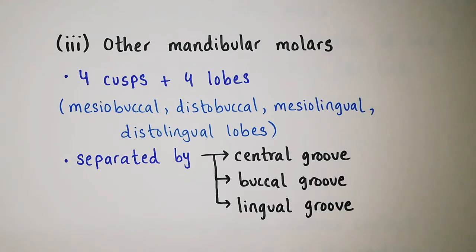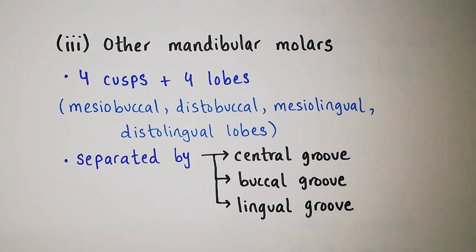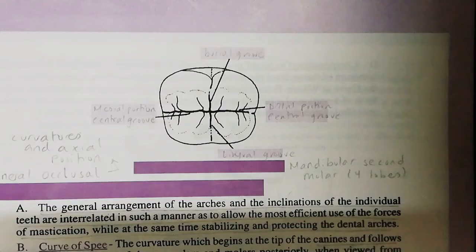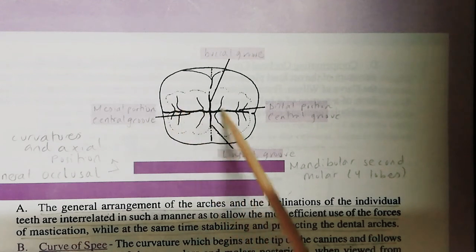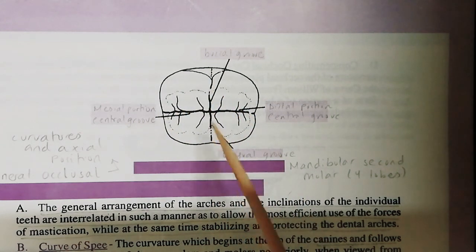The rest of the mandibular molars have 4 cusps and 4 lobes. These are mesiobuccal, distobuccal, mesiolingual, and distolingual lobes. They are separated by the central groove, buccal groove, and lingual groove. In this diagram you can see the occlusal aspect of the mandibular second molar. This is the central groove, this is the buccal groove, and this is the lingual groove.